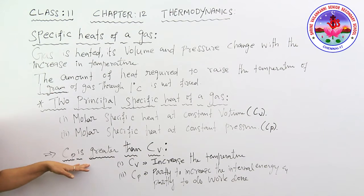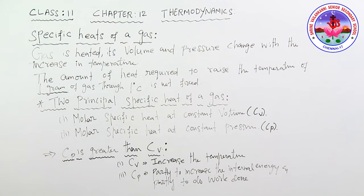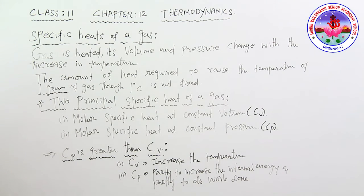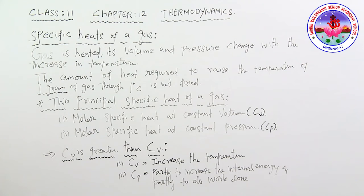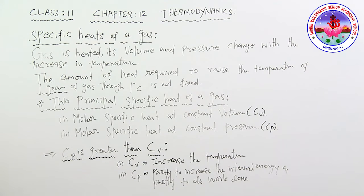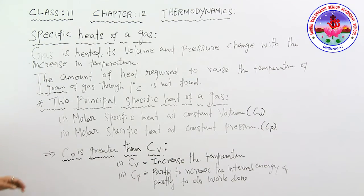Cp is greater than Cv. At constant volume, all the heat supplied is used only to increase the temperature. But at constant pressure, when a gas is heated it expands, so the heat supplied is used in two ways: partially to increase the internal energy and partially to do work against the external pressure. So at constant pressure an additional amount of work is getting utilized.